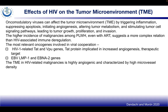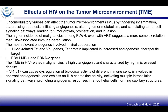The tumor microenvironment in HIV-related malignancies is highly angiogenic, characterized by high microvessel density. HIV-1 p17 can cause dysregulation of biological activity of different immune cells and is involved in aberrant angiogenesis. It exhibits IL-8 chemokine activity, activating multiple intracellular signaling pathways and promoting angiogenic responses in endothelial cells, which form capillary structures.